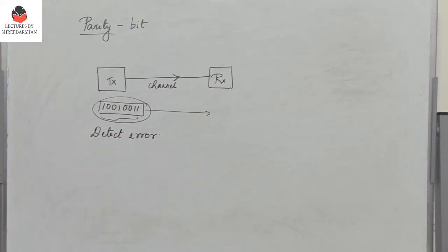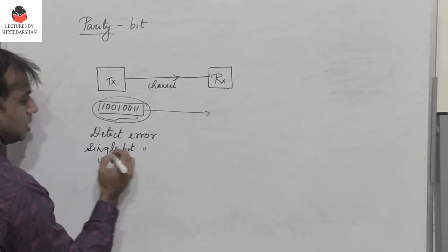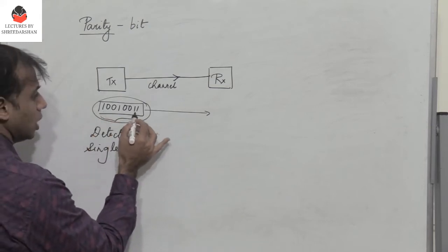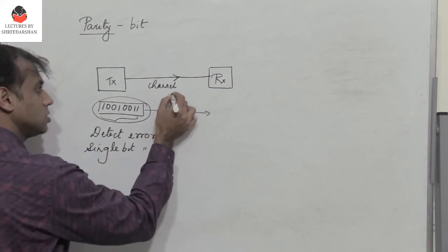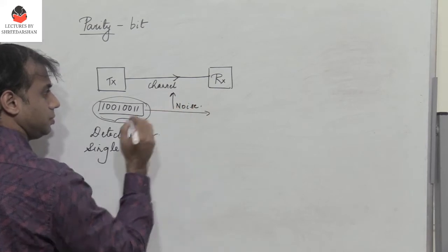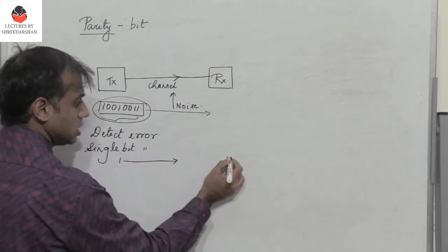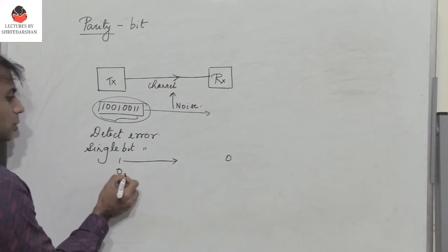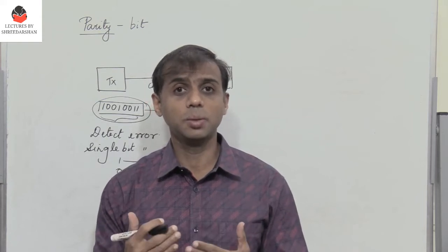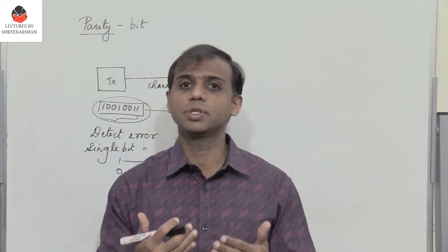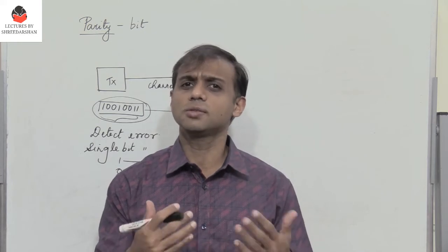Basically, we detect a single bit error. An error occurs because of noise present in the channel. An error occurs if a 1 was transmitted but is received as 0, or if 0 was transmitted and is received as 1. So an error occurs when bit 1 is transmitted and received as 0, or bit 0 is transmitted and received as 1.